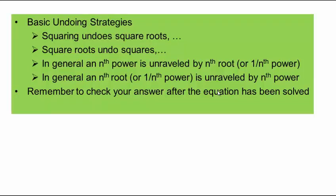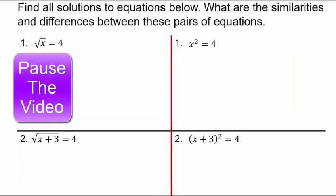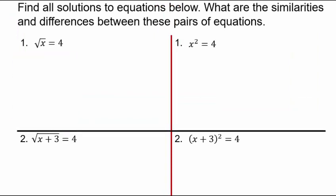Let's take a more in-depth look at radical and power equations. Squaring can be undone by square roots, and square roots can be undone by squaring. In general, nth power can be unraveled by nth root, and nth root can be unraveled by nth power. Whenever you work with squaring both sides, taking even powers, or taking square roots on both sides, you must check your answer because you could end up with extraneous solutions. Pause the video here, find all solutions to the equations below, and discuss the similarities and differences between these pairs: square root of x equals 4 and x squared equals 4; square root of (x+3) equals 4 and (x+3) squared equals 4.